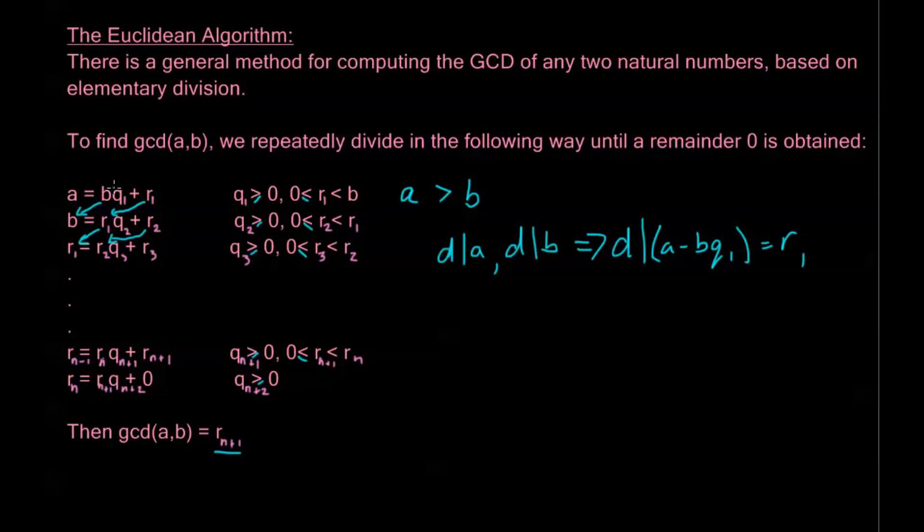All I'm doing in this first equation here is I'm going to subtract B times Q1 to the other side, and I'm left with R1 on the right. Now, why is this? If D divides A and D divides B, that means I can factor out a D from A, I can factor out a D from B, I could bring that D from both A and B out to the front here. That is what we mean by divides.